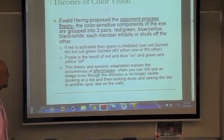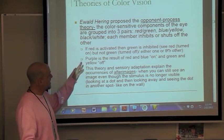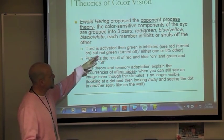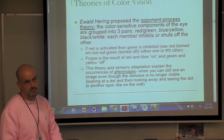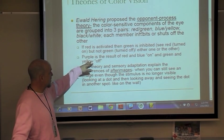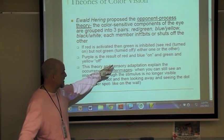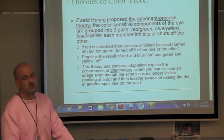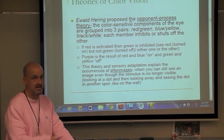The opponent process theory, proposed by Ewald Hering, suggests that color-sensitive components of the eye are grouped into three pairs: red-green, blue-yellow, and black-white. Each member inhibits or shuts off the other — when you see red, green is turned off; when you see blue, yellow is turned off. Color results from certain colors being on and others off: purple is the result of red and blue on, and green and yellow off. Most people don't describe something as reddish-greenish because they see one or the other, not simultaneously.